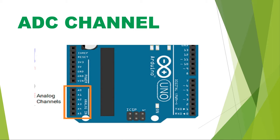On the Arduino board, on the left side, you can observe pins A0, A1, A2, A3, A4, A5 — we have a total of 6 ADC channels. When you attach a sensor, since the sensor supplies analog data, you must connect it to these pins. Built into the Arduino board is an ADC converter IC that converts analog data into digital form, and then the microcontroller processes that digital data.